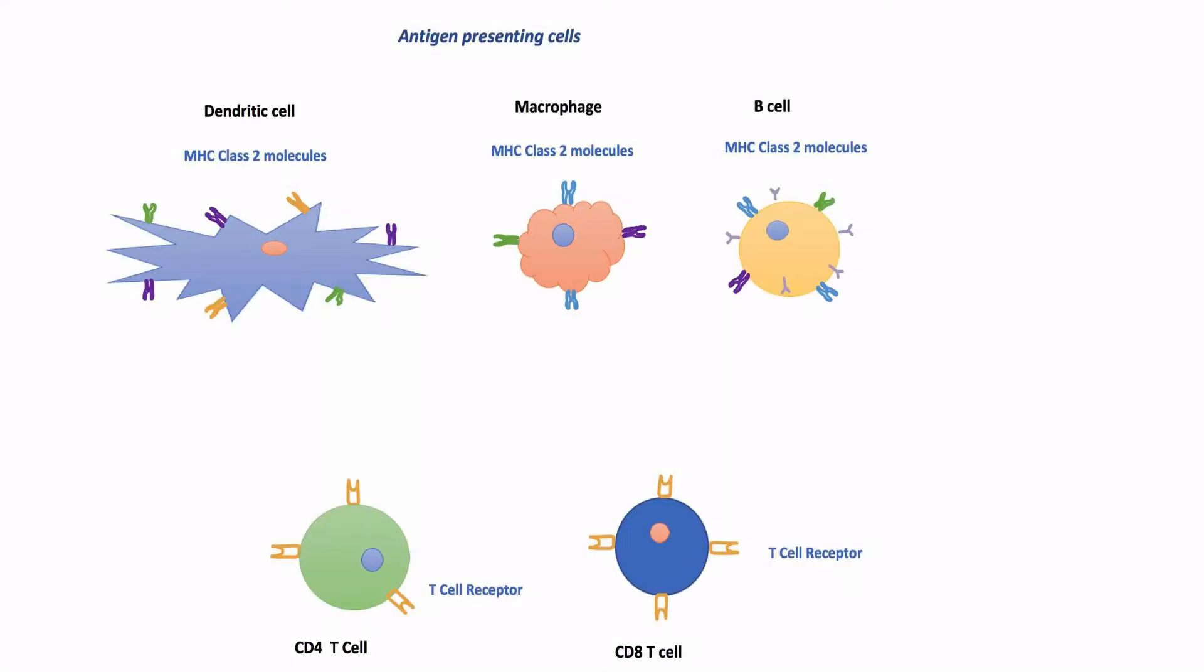Similarly, antigen presenting cells have MHC class 2 molecules on cell surface. These cells include dendritic cells, macrophages, and B cells. These cells ingest pathogens. Resulting peptides from breakdown of these pathogens are presented on the cell surface with MHC class 2 molecules. These cells then move to regional lymph nodes where most of the immune response occurs.